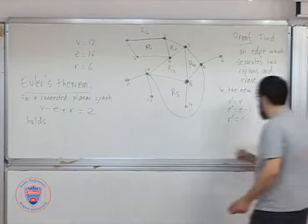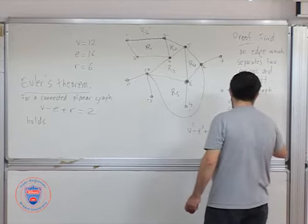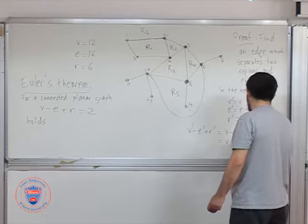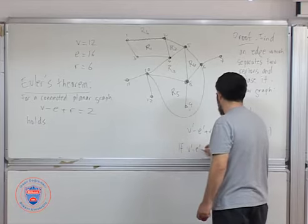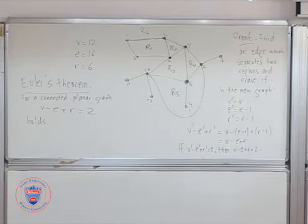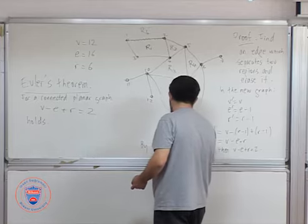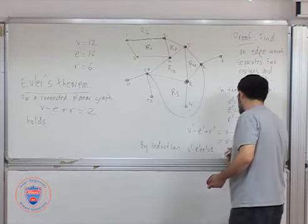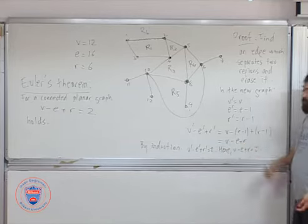But the formula doesn't change, right? These ones cancel, so you get the same thing. So if this is two, then this one is two as well. Which means by induction, this one is true. We can say by induction this one is true, hence this one is true. By induction means you have less vertices, less edges, so it's a similar setup. You can set up your induction on the number of edges, for example. Since this is less edges, it's true for this, so it should be true for this.